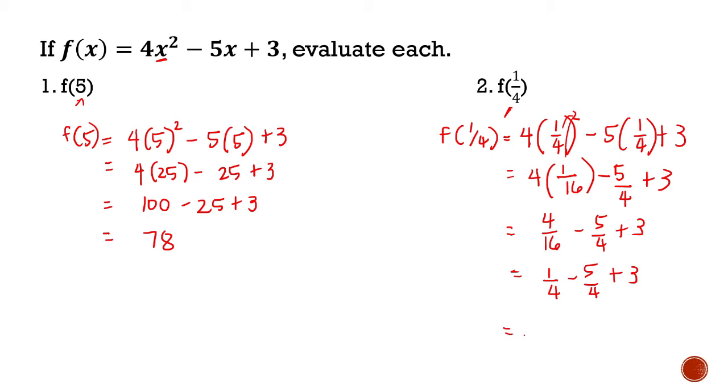1/4 minus 5/4. Since they are similar fractions, we can simply copy the common denominator and just subtract the numerators. So 1 minus 5 is negative 4 plus 3. And of course, that is negative 1 plus 3, and the final answer is 2. Pretty easy.